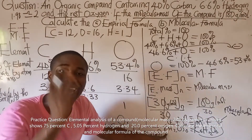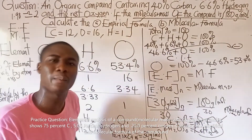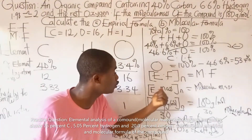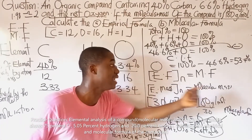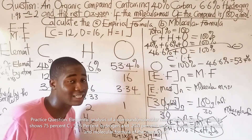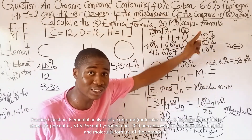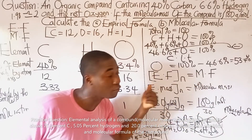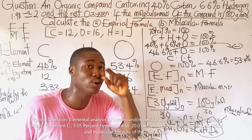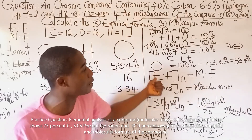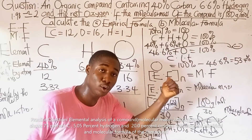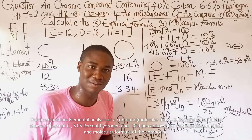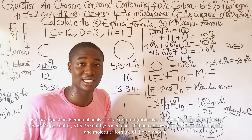That is the empirical formula and molecular formula of this compound. After getting the empirical formula, change the formula to mass form, calculate the empirical mass, bring in the molecular mass given in the question, divide both sides by the coefficient of n to get n, then substitute back to get the molecular formula. It is very easy and not difficult.